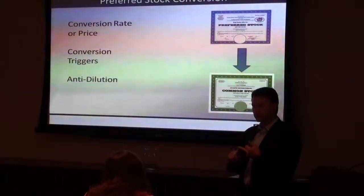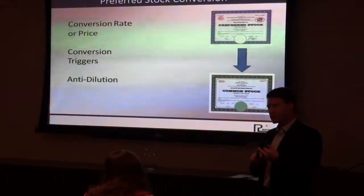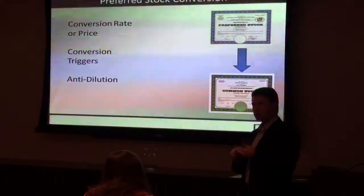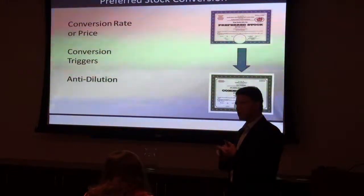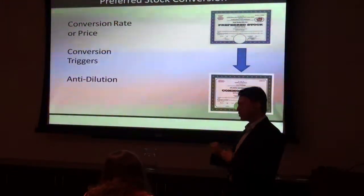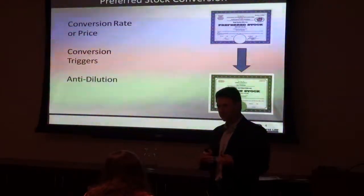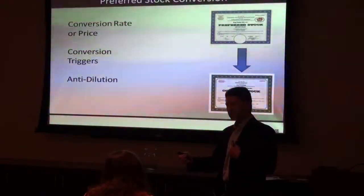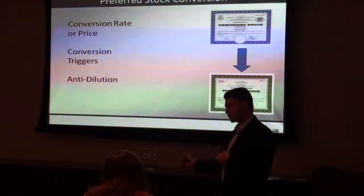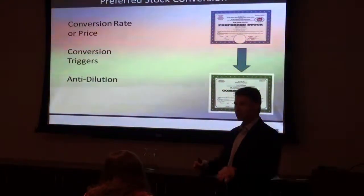The Board of Directors has to approve that, and to amend articles it requires consent of the shareholders in both California and Delaware. There is this concept called blank check preferred, where the articles basically say the Board of Directors is authorized to create all the rights and preferences of various series of preferred. The reason that's there is so you don't have to go back to the shareholders every time you issue preferred — the board is given the authority to do that.